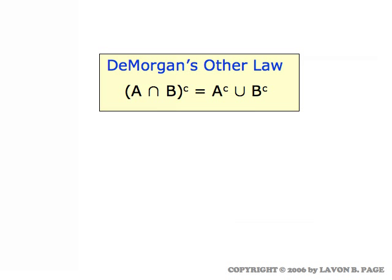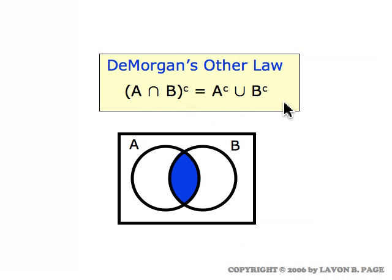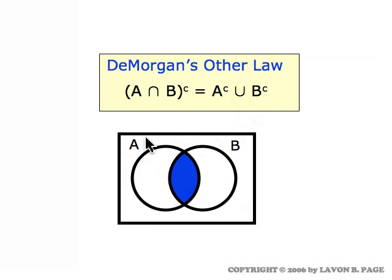The other one of De Morgan's laws says that if you have the complement of an intersection, it's the same as the union of the two complements. For the left side, the intersection of A and B would be the blue football-shaped region, so the complement of that would be all the white area. See if you can observe that that's the same thing as what you would get if you took the complement of A — everything outside of A — and unioned it with the complement of B — everything outside of B. The only thing that's not outside of at least one of the two sets is the blue football-shaped region.